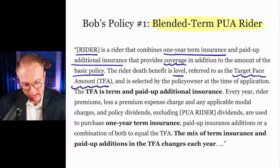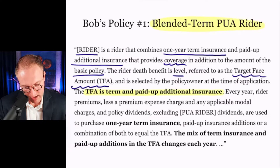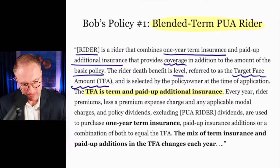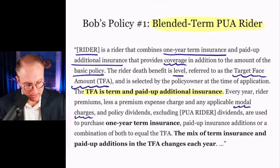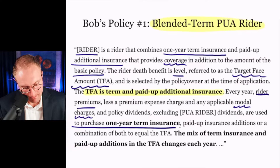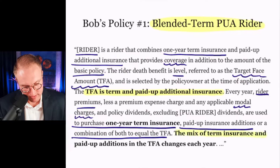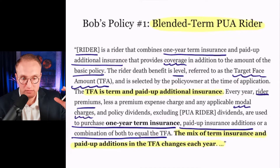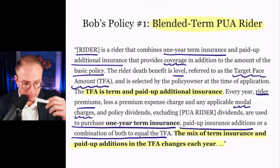The mix of term insurance and paid-up additions that constitutes the target face amount will change each year. 'It is anticipated, but not guaranteed, that over time the amount of term insurance will decrease and the amount of paid-up additions will increase until the crossover year. The crossover year is the point in time when the paid-up additional insurance death benefit is equal to the target face amount and the purchase of one-year term is no longer necessary.' Based on the illustrated dividend schedule, the crossover for this policy does not occur based on the assumptions in the tabular values and does not occur based on assumptions in the supplemental values.